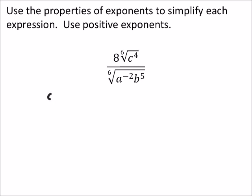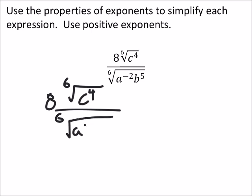So I'm going to take this 8 and kind of separate it from everything else. So 8 times the 6th root of c to the 4th over the 6th root of a to the power of negative 2 times b to the power of 5.